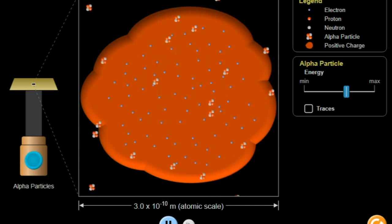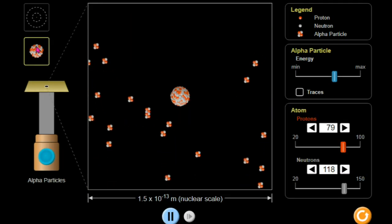Rutherford's findings instead suggested a model with a small, dense nucleus at the center of the atom, surrounded by electrons in orbit. This became the foundation for our modern understanding of atomic structure.